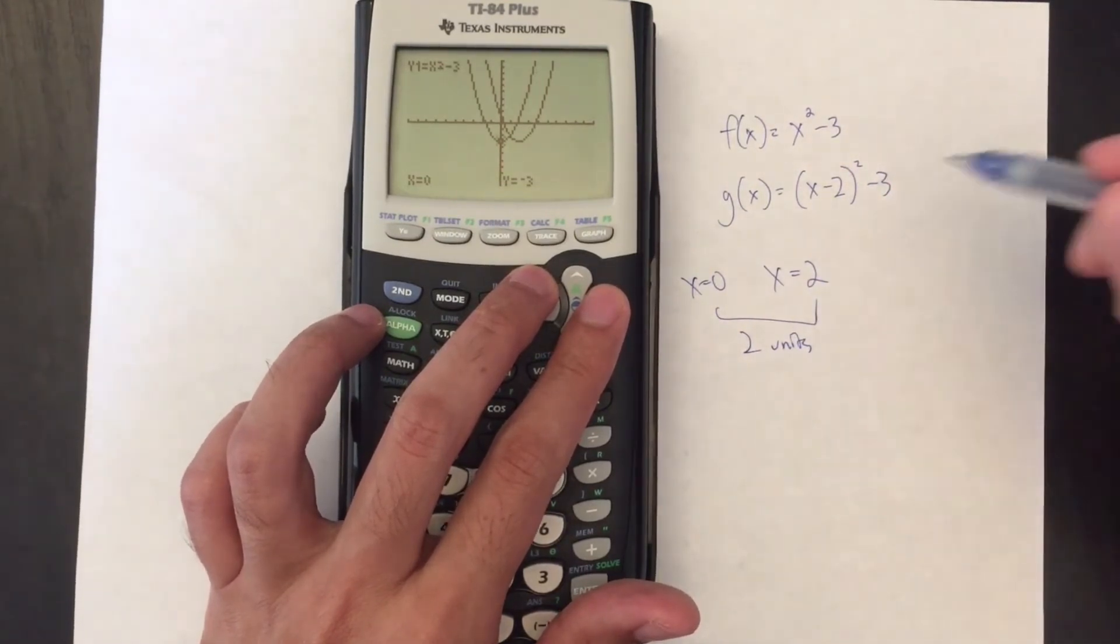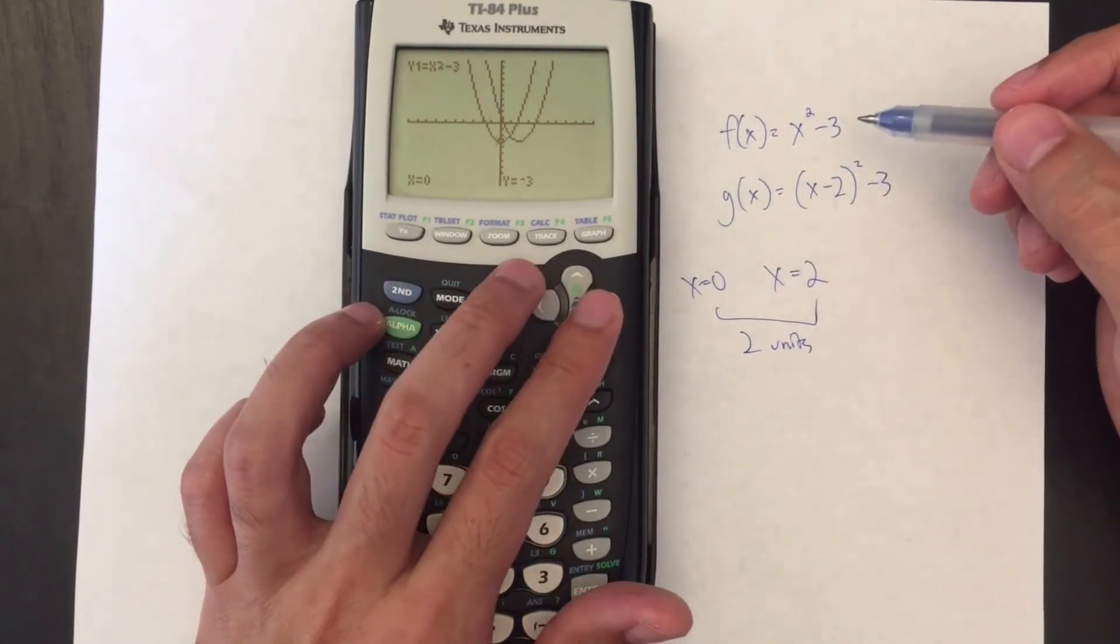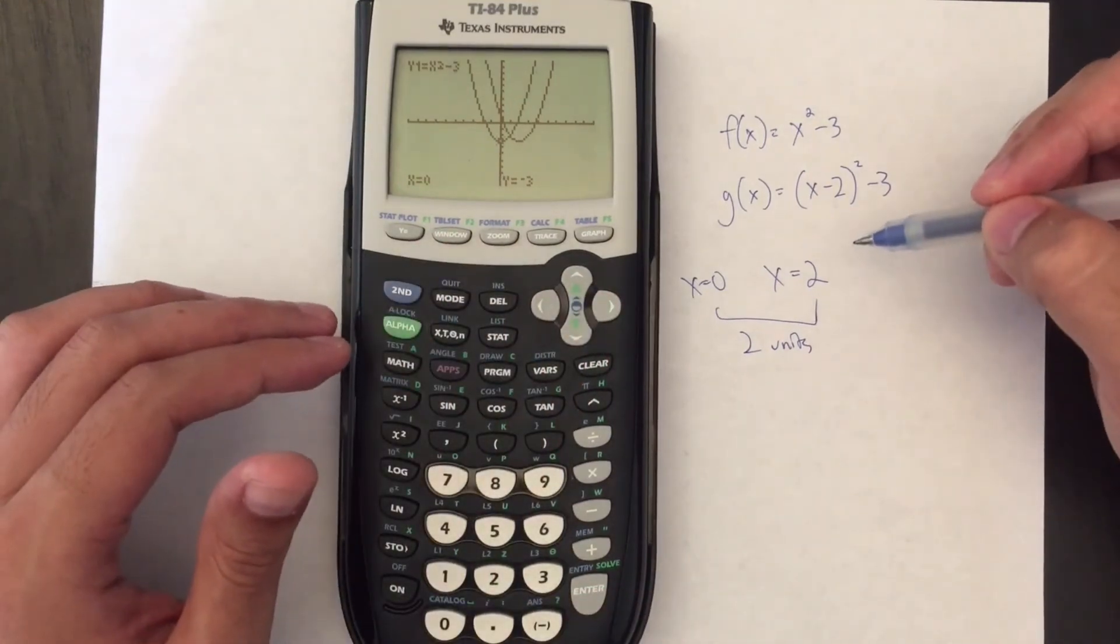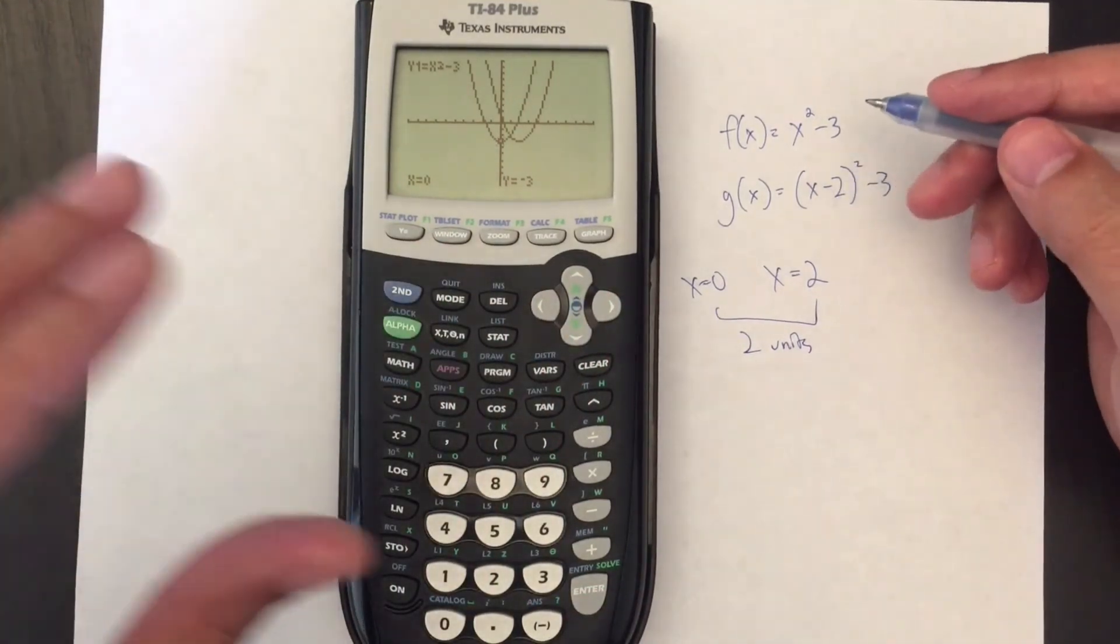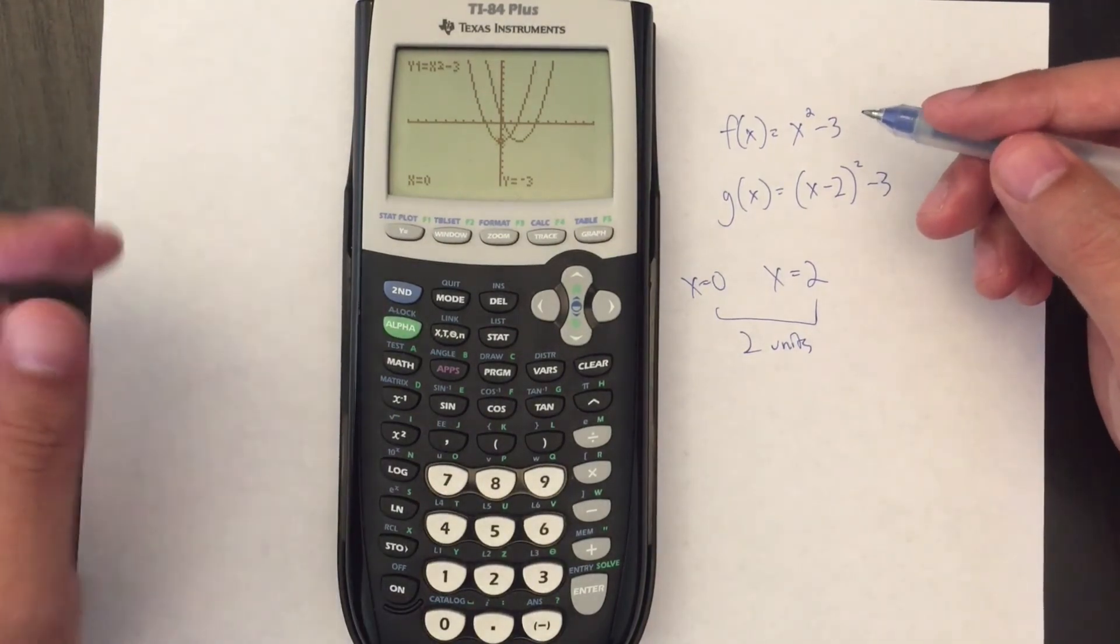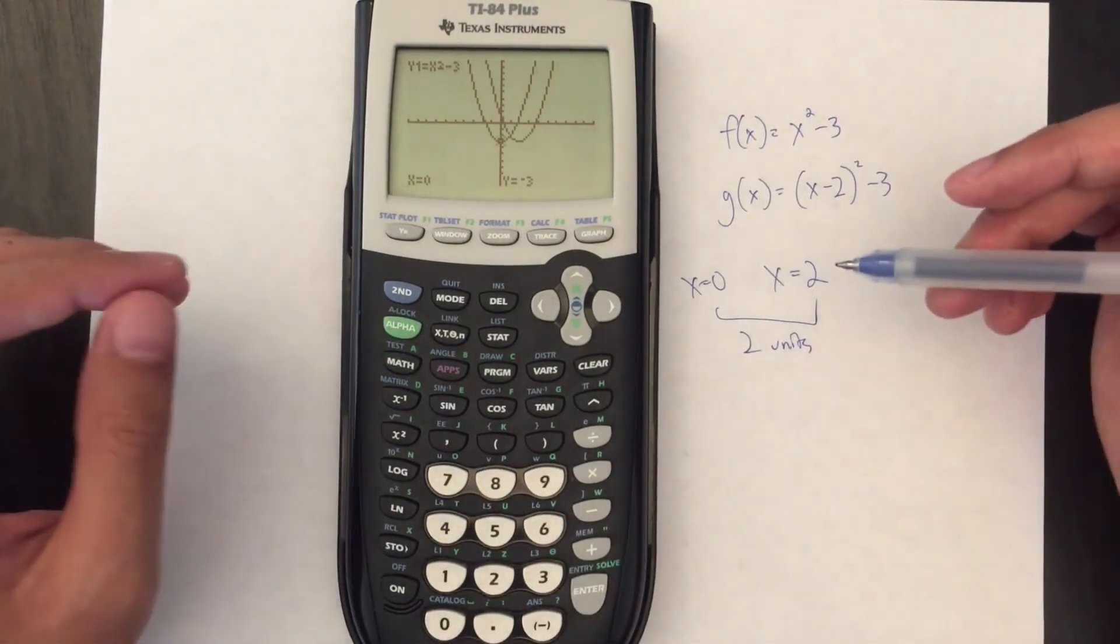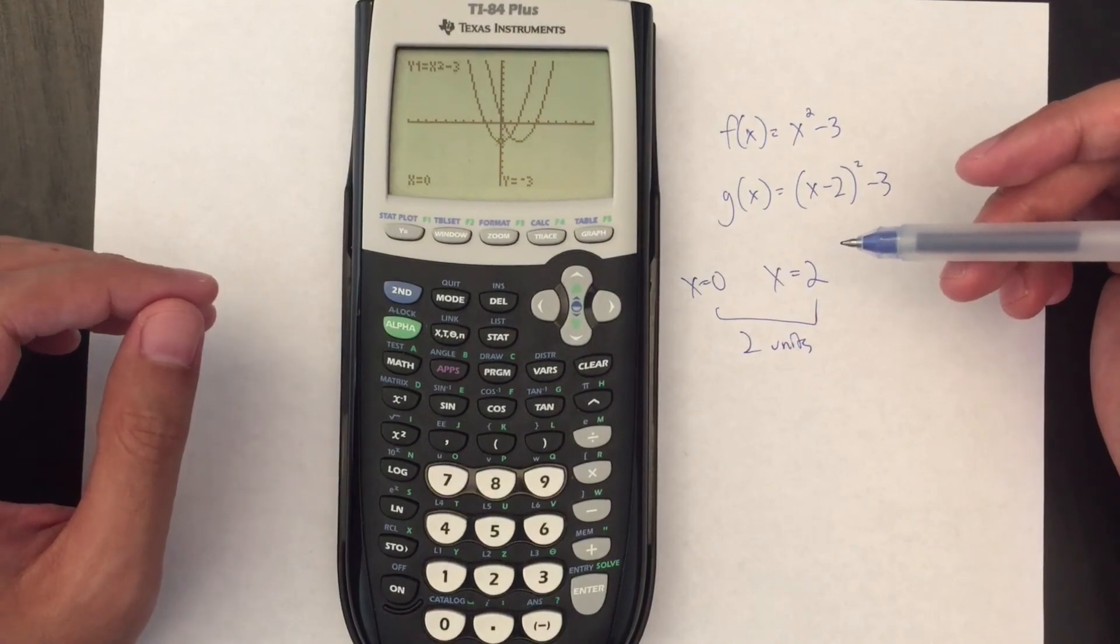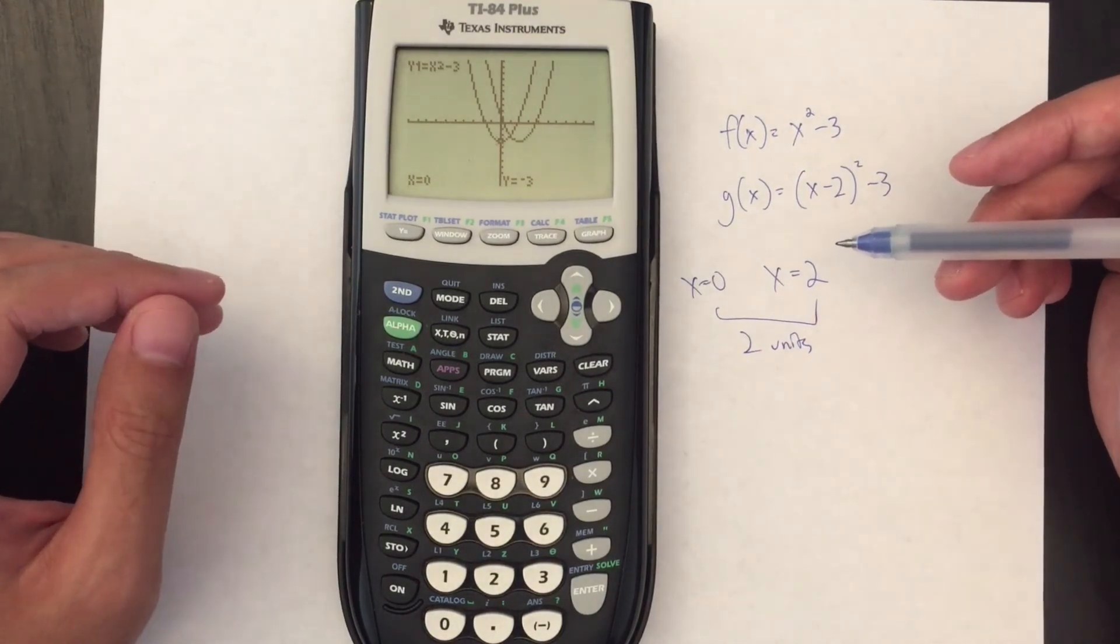Now of course this was a very simple example, but you can easily see how this might help you for more complicated functions and comparing how one has been translated from another, you know, vertical shifts, horizontal shifts, that sort of thing. So hope you found this helpful and thank you for watching.